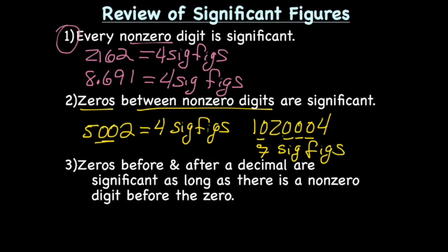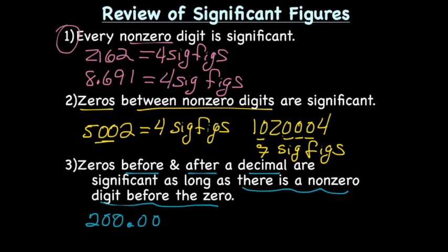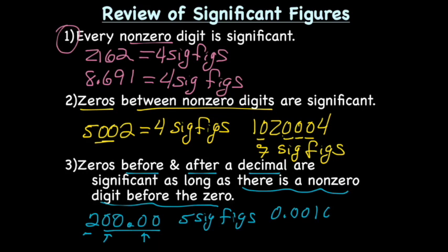Zeros before and after decimals are significant, as long as there is a non-zero digit somewhere before the zero. So if we had 200.00, all of these zeros are significant because the first two are before a decimal, the second two are after a decimal, and there is a non-zero digit in front. That gives us five sig figs. If we had 0.00100, there are only three sig figs — those leading zeros are not significant because there is no non-zero digit before them.